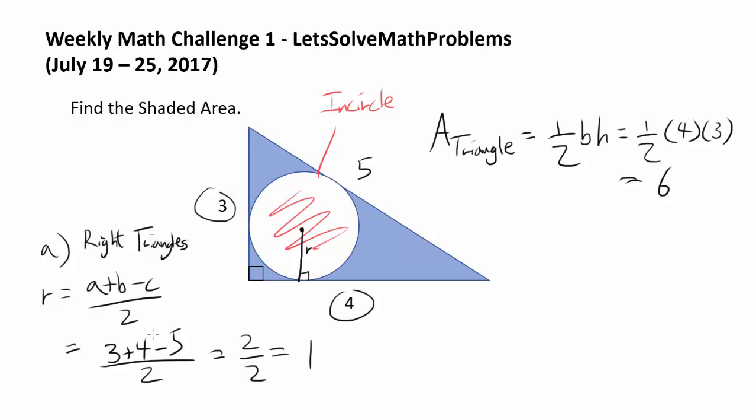So in this case, inradius comes out to be 1. And it should always come out to be 1 actually. And the second way is the way that works for all triangles. And it is area of a triangle is equal to inradius times semi-perimeter. And semi-perimeter is perimeter of the triangle divided by 2. And what is the perimeter of the triangle?